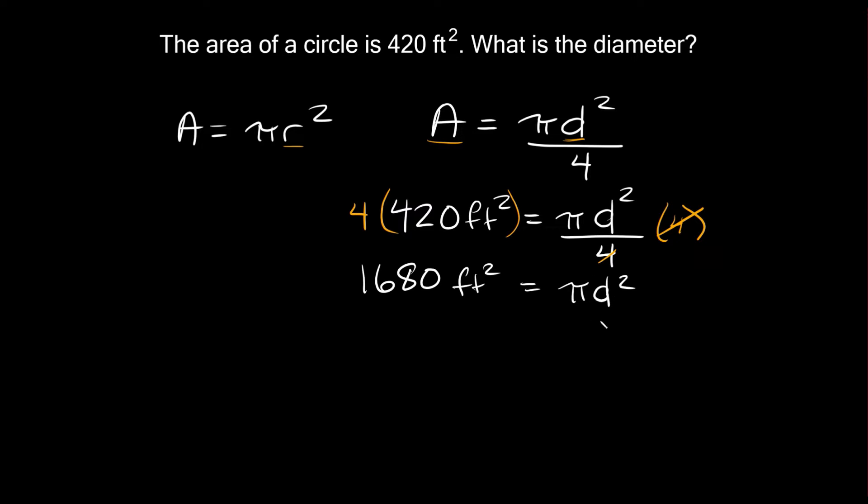The next thing we can do is divide both sides by pi. On this side they cancel out. On this side we have 1680 divided by pi. Remember pi is approximately 3.14, so you could plug in 3.14 or use your pi button on your calculator. You should get approximately 534.76 feet squared, and that equals d squared.